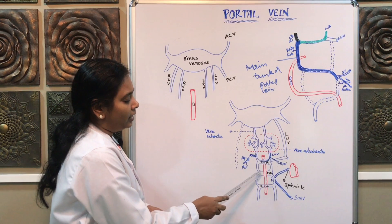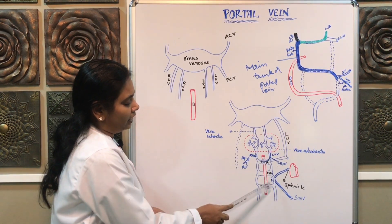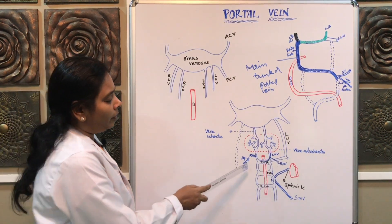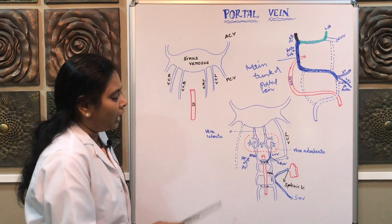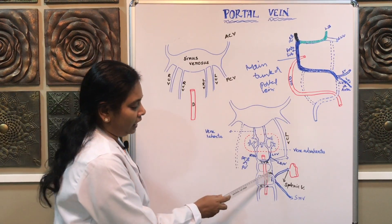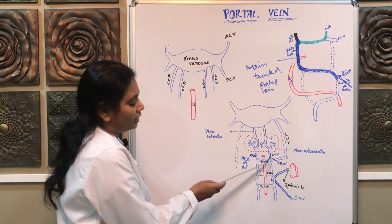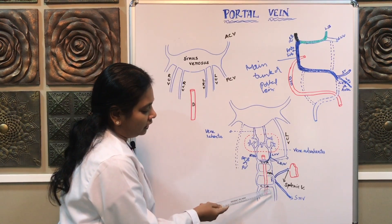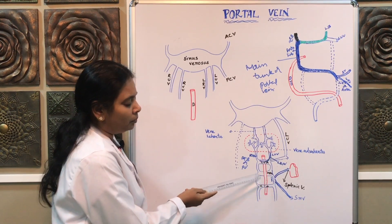On either side of the duodenum, you will have the right and the left vitelline vein. In the lower part of these vitelline veins, there is anastomosis. Both veins are anastomosed with each other in three regions: one in the upper part, another one in the lower region, and the third one in the middle region.